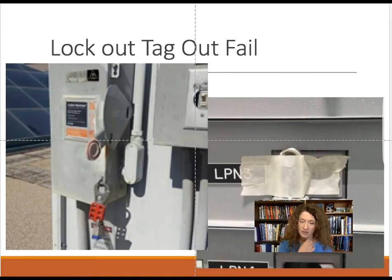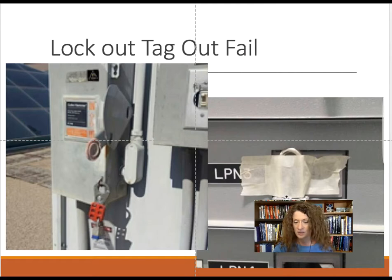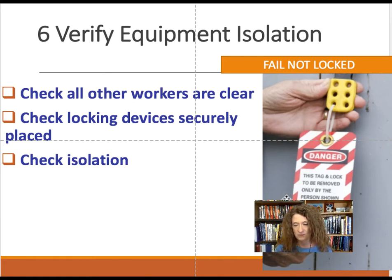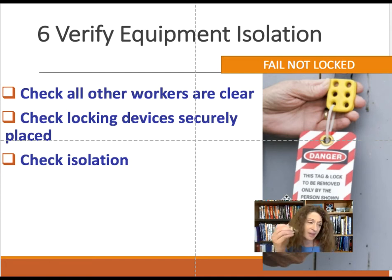Here are examples of lockout-tagout fails. In one example, they're locking out the opening of the box — but opening the box won't kill you; throwing the switch would. A piece of tape is not considered a physical barrier and can fall off. Step 6, which is sometimes forgotten, is to verify that equipment has been isolated, that workers are out of the work area, and that all energy sources are isolated. In another example of improper lockout, a tag is on the hasp which anyone can remove — you want someone to physically have to use a key to remove a lock.